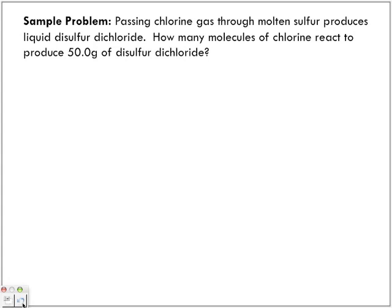Sample problem: Passing chlorine gas through molten sulfur produces liquid disulfur dichloride. How many molecules of chlorine react to produce 50.0 grams of disulfur dichloride? Step one, always start off with your balanced equation.